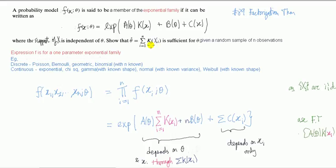If we have a probability density function or probability mass function, depending on whether the random variable is continuous or discrete, it's a member of this exponential family if it can be written in this form: the exponential of A(θ)K(x) plus B(θ) plus C(x), where θ is a parameter. In the exponent, you've got some function A which depends on the parameter.